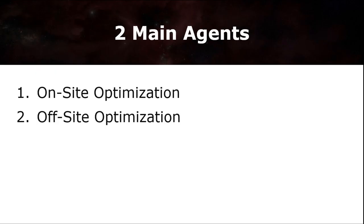There are two main agents that you need to take into account to generate your desired traffic. These agents are: one, the on-site optimization, and two, the off-site optimization.